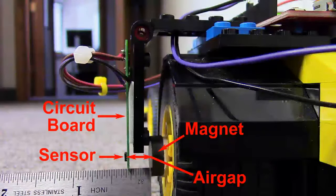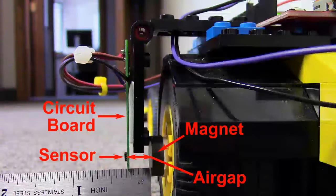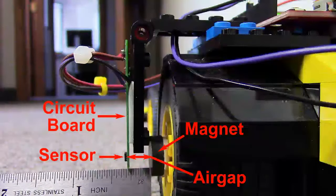Again, the position isn't critical because these sensors are very forgiving. This is pretty awesome. You can't do this with a Hall effect sensor.